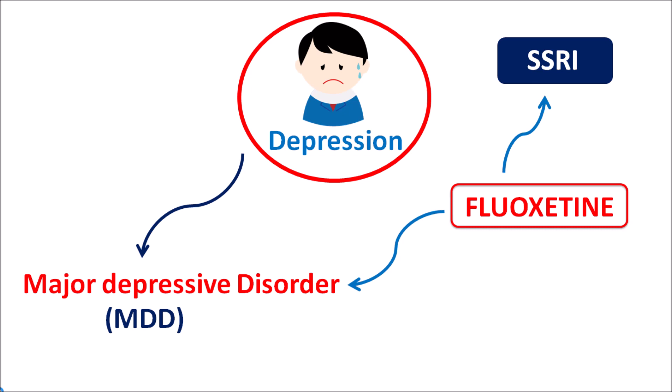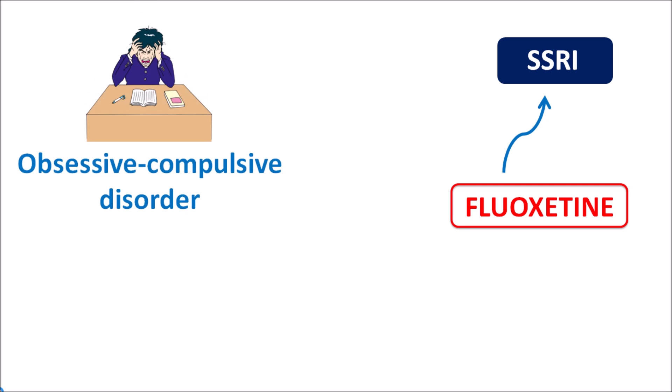Fluoxetine is not only used to treat depression but can be used for various clinical conditions. It can be used in the treatment of anxiety disorders such as obsessive compulsive disorder (OCD), which is associated with obsessions or compulsions in doing activities that increase anxiety and agitation. SSRIs have proven more effective in treatment of anxiety disorders, and fluoxetine can be used to treat OCD.